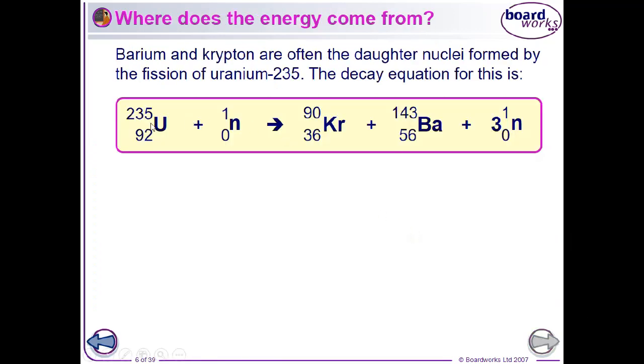We can draw a nuclear equation. So we've got uranium with 92 protons. There's no protons in the neutron. This gets split into krypton, which is 36, and barium, which is 56. And again, no protons in the neutron. So, 56 plus 36 gives us 92. So, all the protons are accounted for.